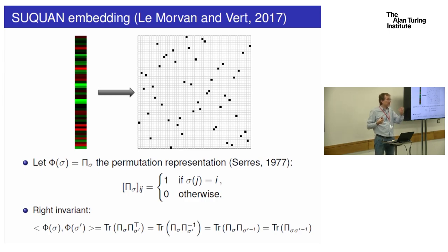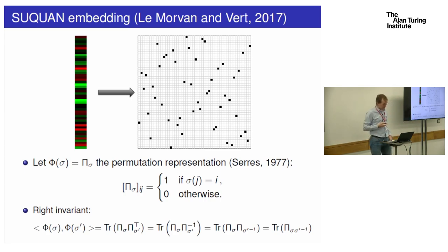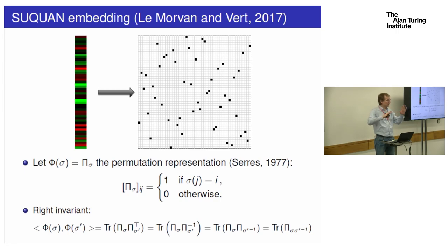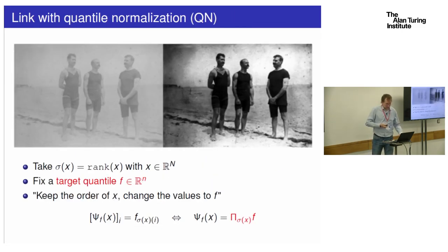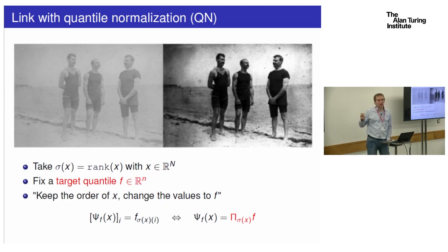If you do that, any sigma is represented as a matrix — a vector — and then you can make linear models over the space of matrices. This representation is right invariant; it's easy to show. It has the property that if you multiply everybody by some arbitrary pi on the right, all the matrices are changed but not the inner product between any two sigmas.